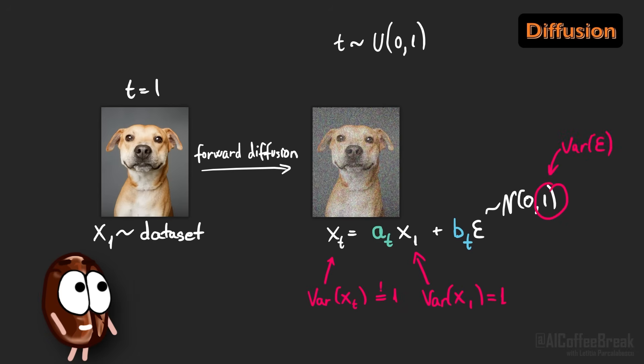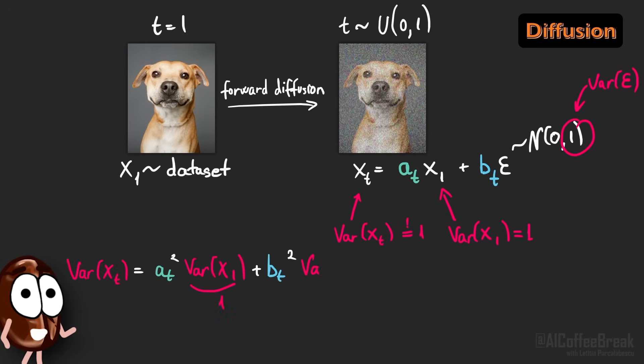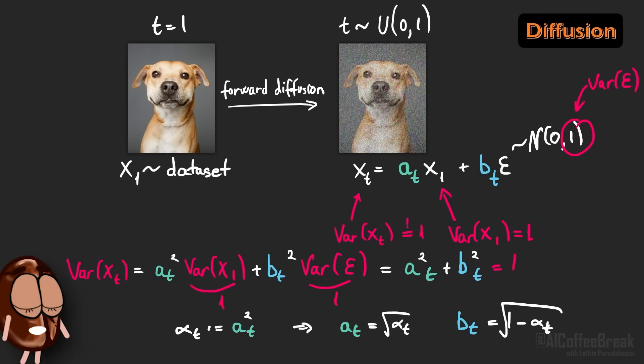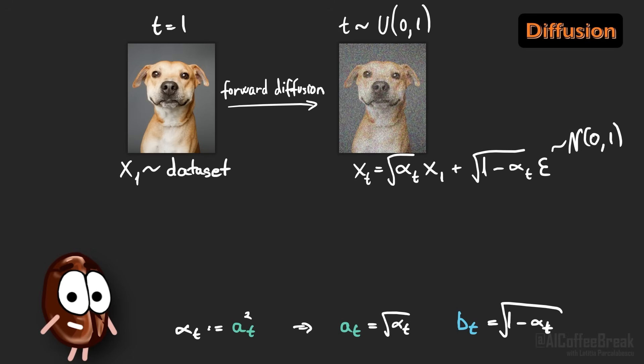The noise epsilon has a variance of 1 by construction, because we draw epsilon from a normal distribution with mean 0 and variance 1, so to keep the total variance of xt also equal to 1, the variances from the two parts must add up correctly to 1. By defining alpha t to be at squared, we can deduce that at is square root of alpha t, and bt is square root of 1 minus alpha t. With that, we can write the forward diffusion formula that is generating our training data for our diffusion model like this.